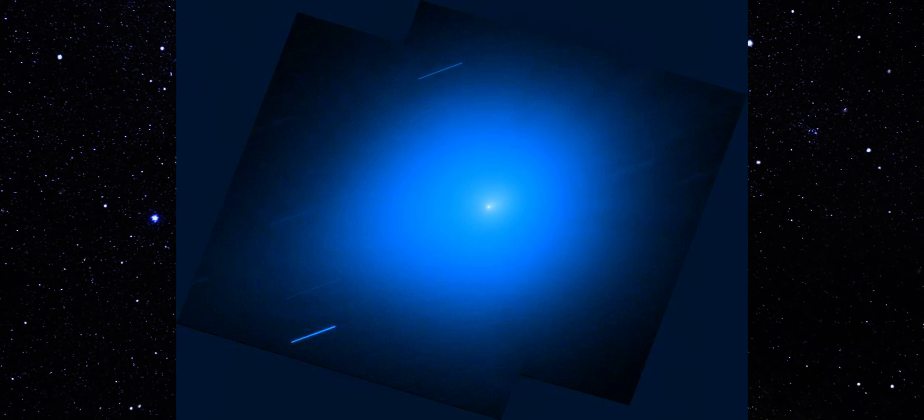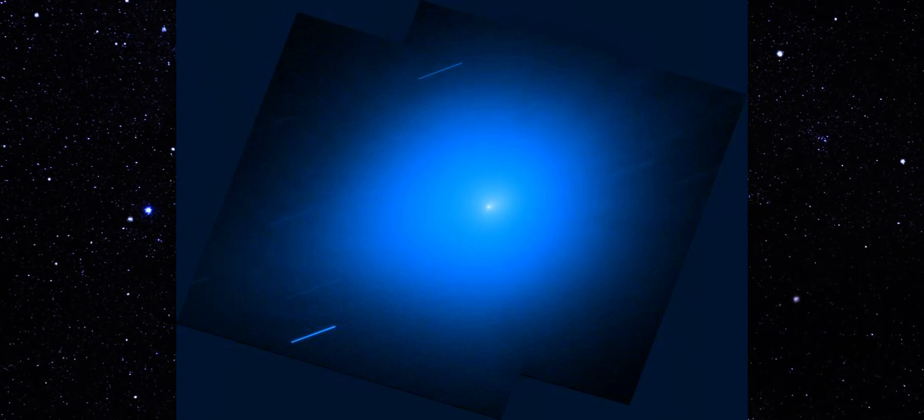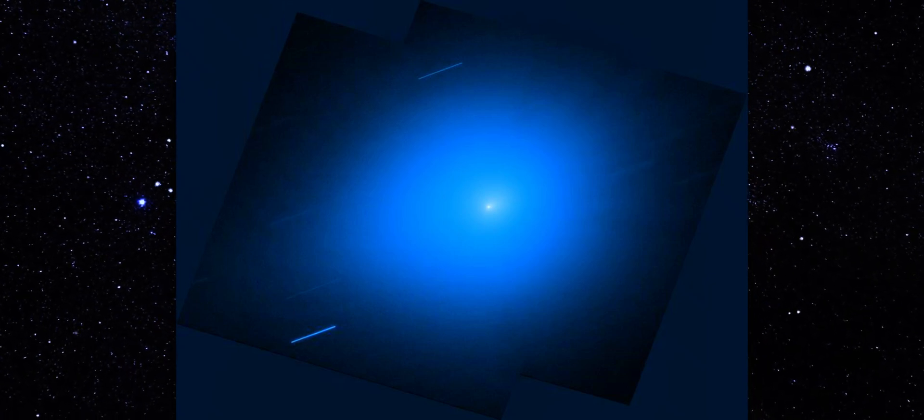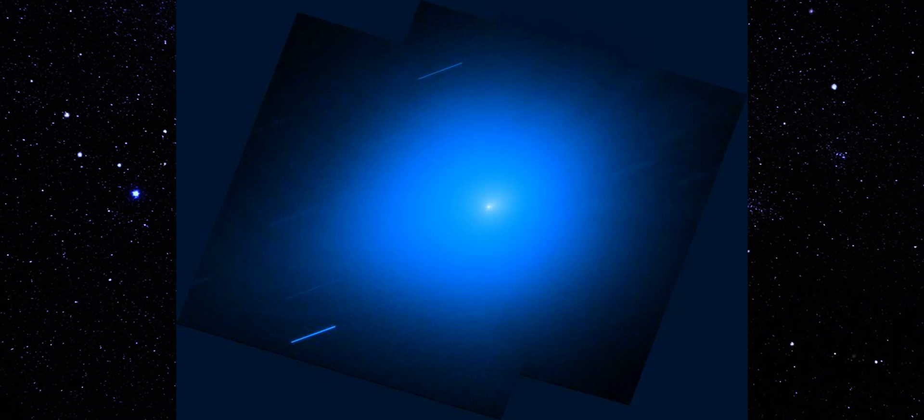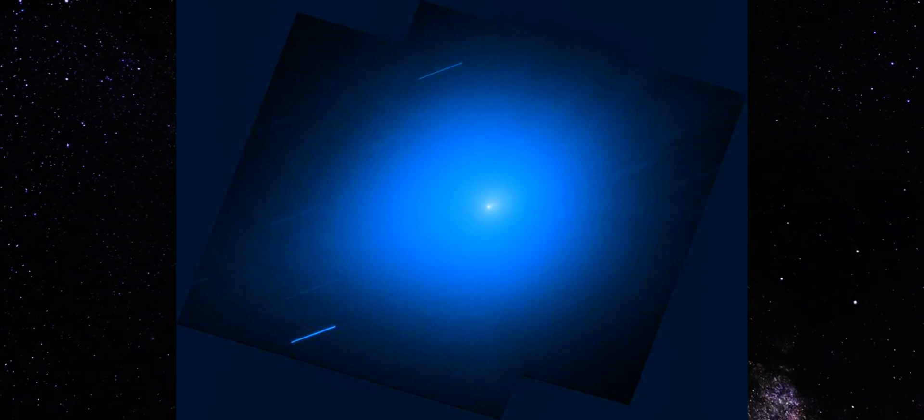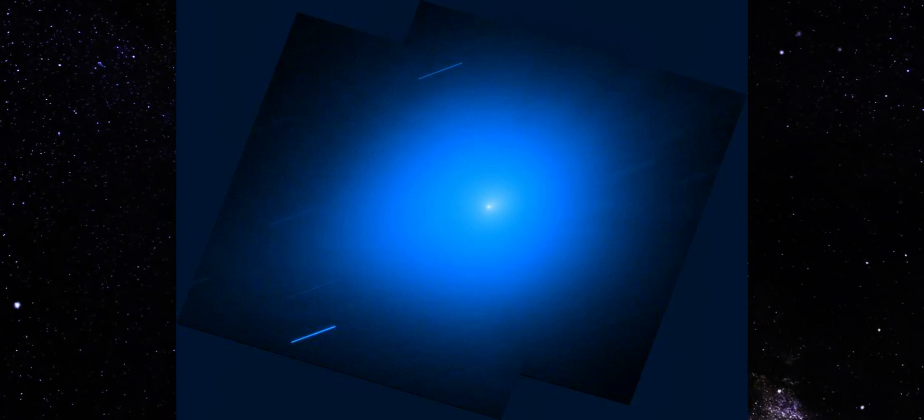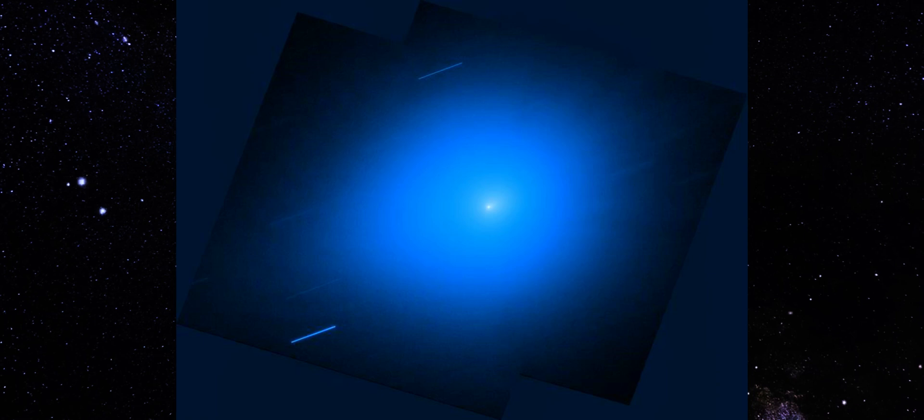But that faint reach toward the right still shows through. Even without color mapping or enhancement, you can see the light pulling just slightly in one direction. Subtle, yes, but persistent across every frame collected so far. And consistency means it's real.